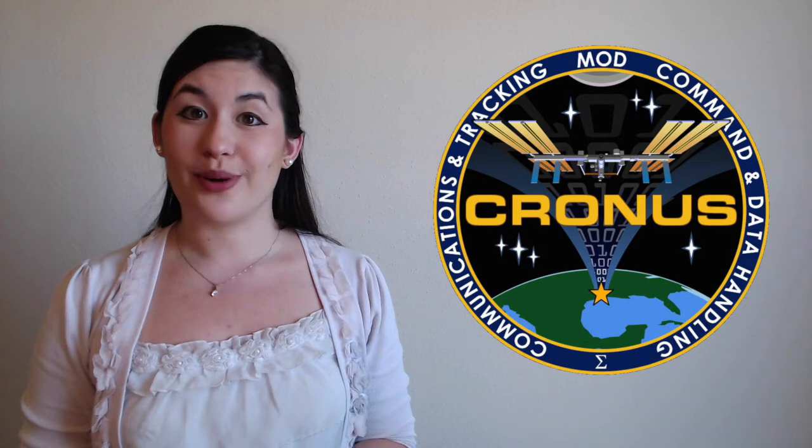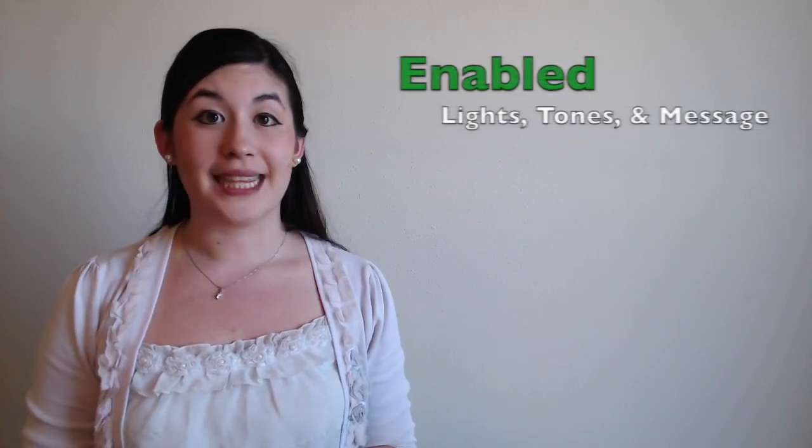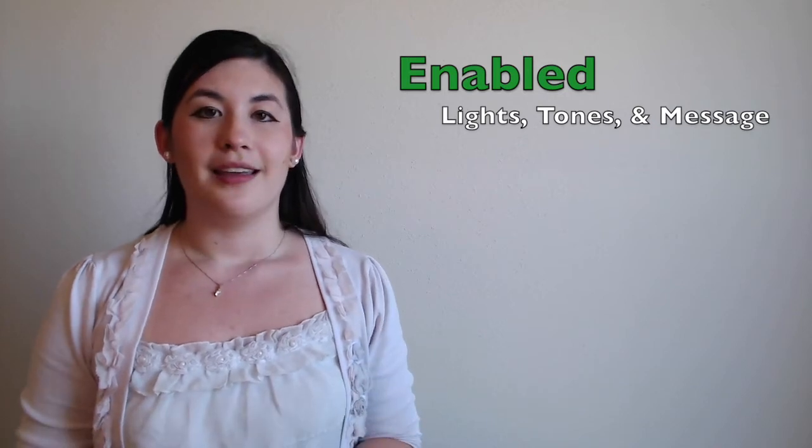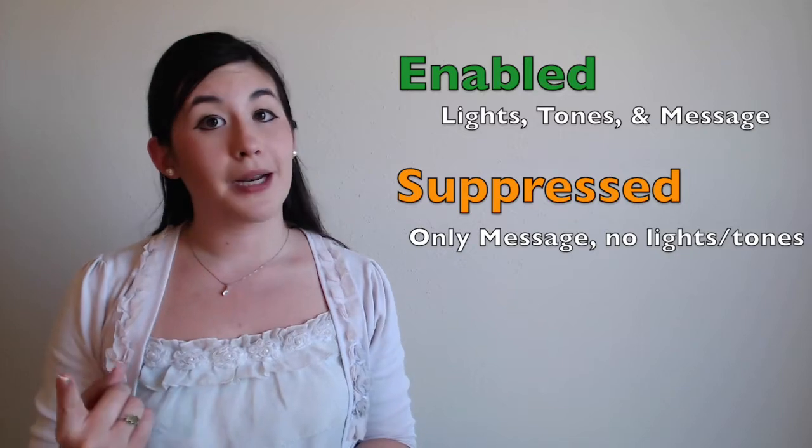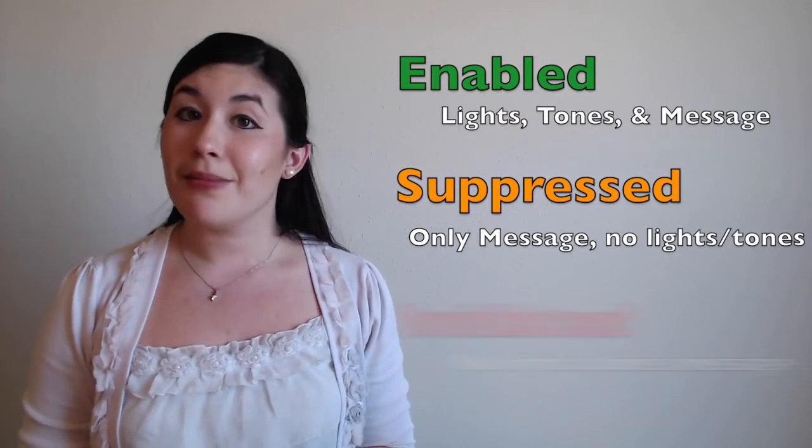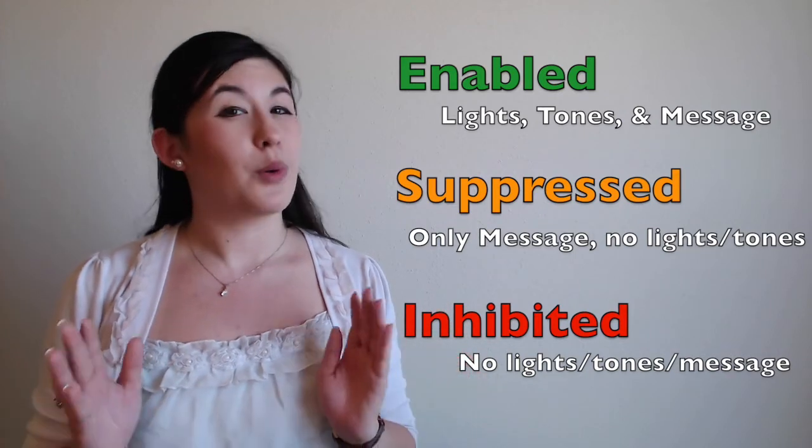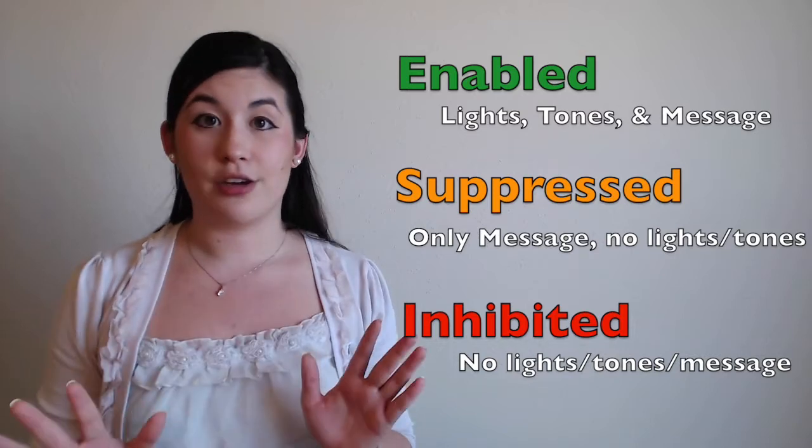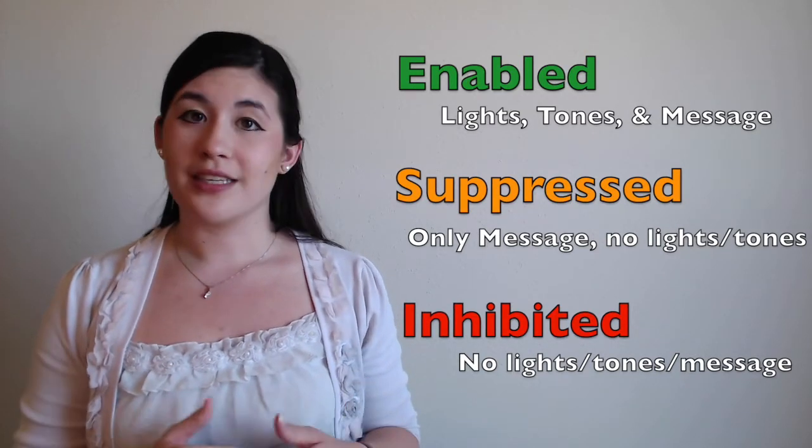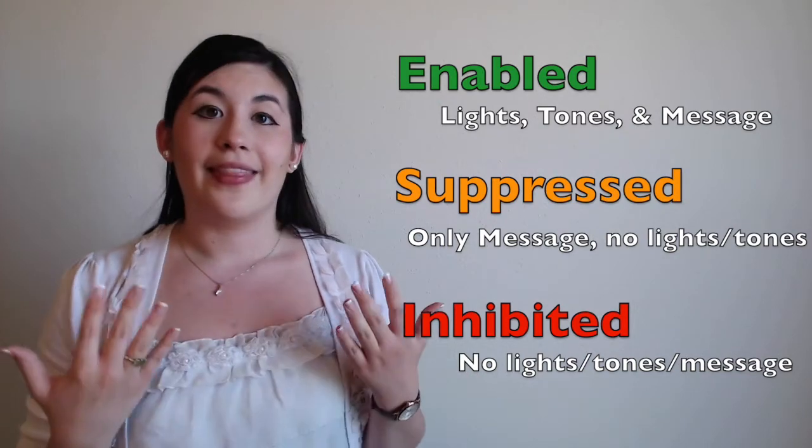The caution and warning server, which has all the information on all of our caution and warning events, is managed by Cronus. It's our job to make sure the ground and the ISS stay in sync. We also check a console tool where our international partners can submit annunciation state change requests. What are annunciation states? Every event can be in one of three, and these matter when an event goes into alarm. If an event is enabled, we'll see lights on board, tones on board, and a message on our tools. If an event is suppressed, we'll see no lights, no tones, but a message will still come up. If an event is inhibited, we'll see no lights, no tones, and no messages, but we will see it come up in our event log, which is any change in any caution and warning event. Since Houston is the only one that can change these things, we look at the request, make the change, and then let our partners know when it's complete.